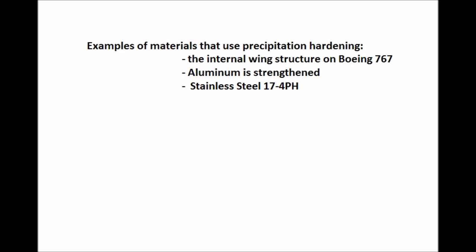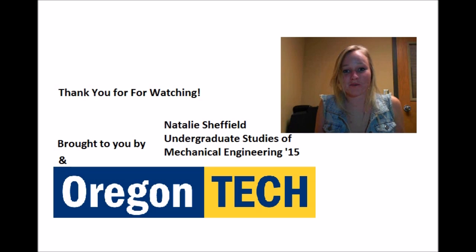Examples of materials that use precipitation hardening include the internal wing structure on a Boeing 767, which is made out of aluminum, aluminum is strengthened, and stainless steel. Thank you for watching. My name is Natalie and I am a mechanical engineering student at Oregon Tech.